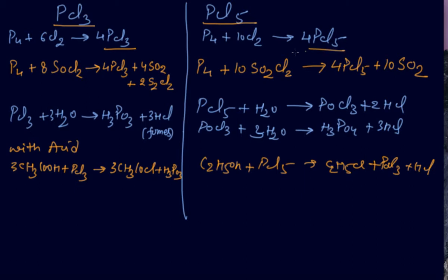Next one is important and confusing, my dear students: SOCl2, that is called thionyl chloride. With thionyl chloride we are getting PCl3. With S2Cl2, sulfur monochloride, and here SO2Cl2, it is called sulfuryl chloride.